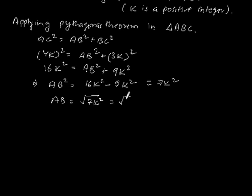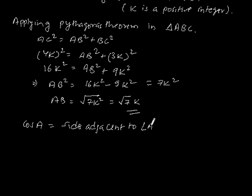Now let's find out cos A. Cos A is equal to side adjacent to angle A by hypotenuse. Side adjacent to angle A is AB.